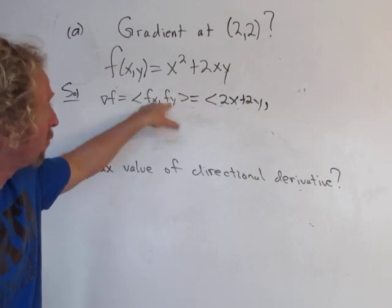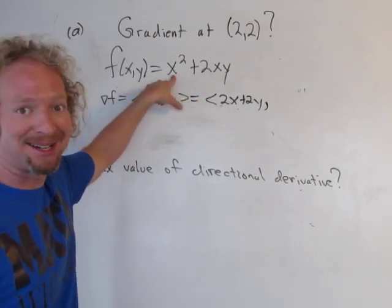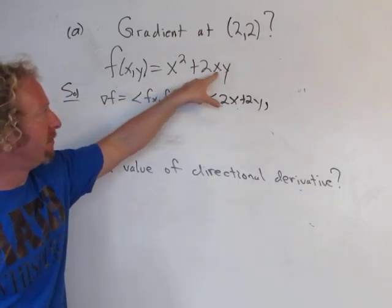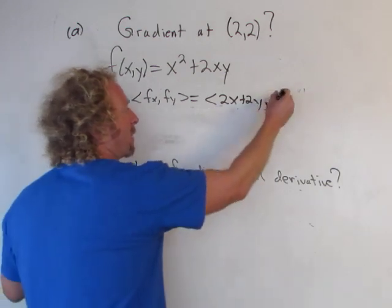The partial with respect to y, well this derivative here is 0, right? We're treating it as a constant and then this y here, its derivative is 1, so we're left with 2x for that partial there.